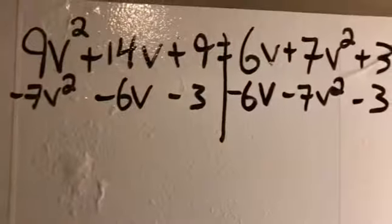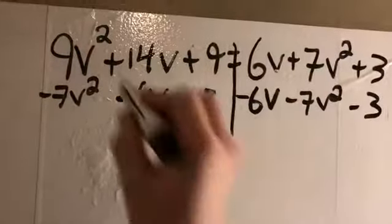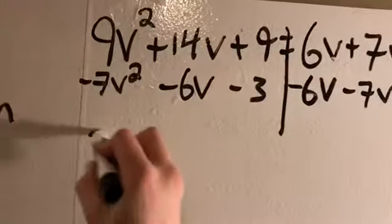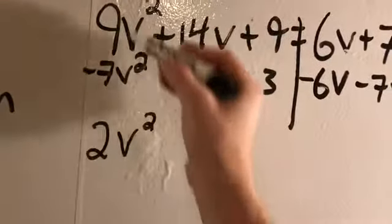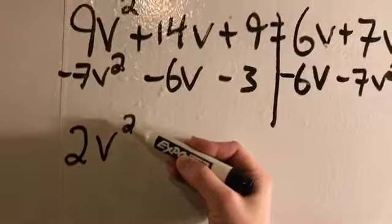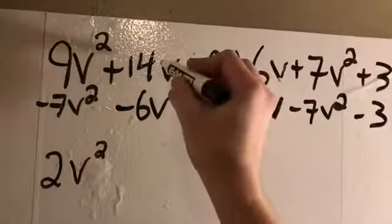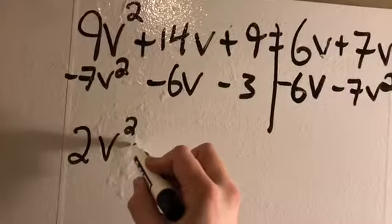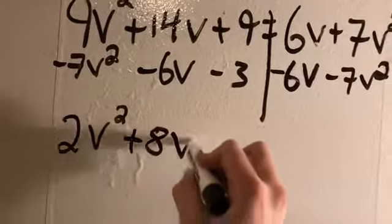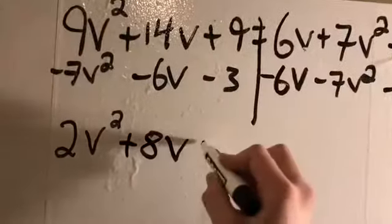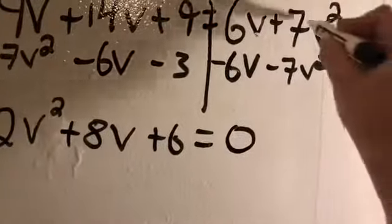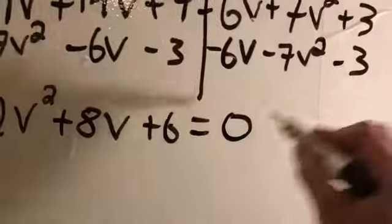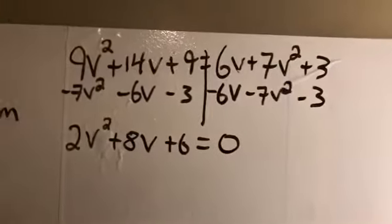So now I set to finish all of that little subtraction I just set up. 9v² - 7v² is 2v². Notice my exponent didn't change. When you add and subtract, exponents don't change, only when you multiply. 14v - 6v is positive 8v. 9 - 3 is positive 6, equals 6 - 6 is 0. 7 - 7 is 0. 3 - 3 is 0. So we're good to continue.